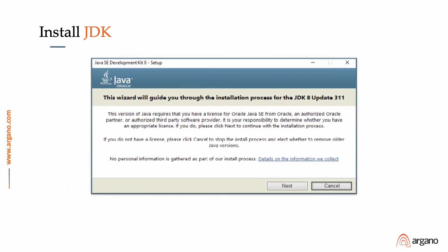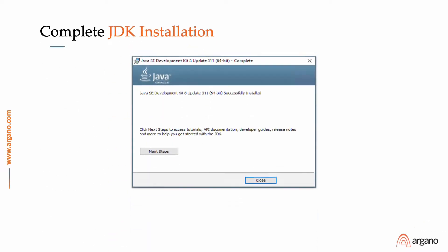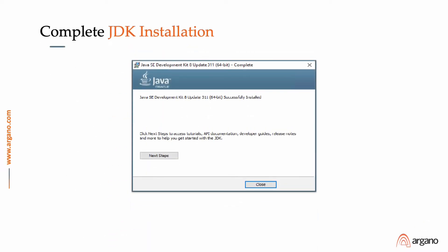Once that installation is complete, we move on to the JDK installation for S-SPACE 21C. We install JDK 1.8 Build 3.11 on the S-SPACE 21C directory structure, which we have built.